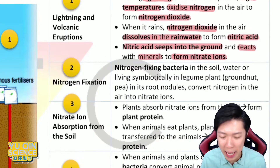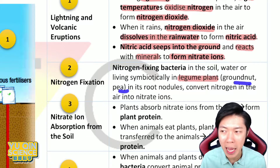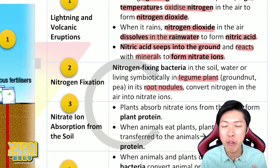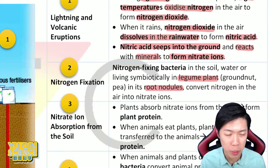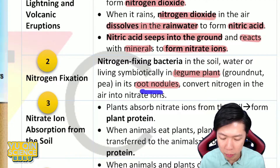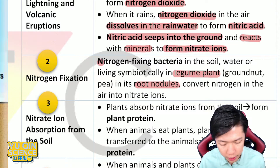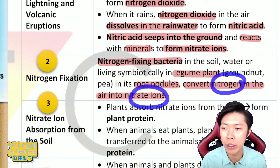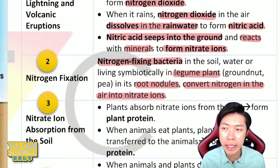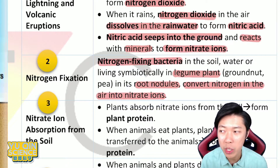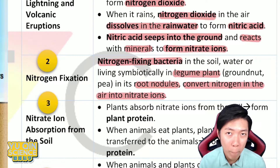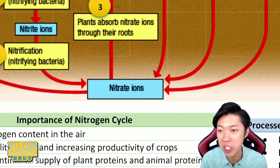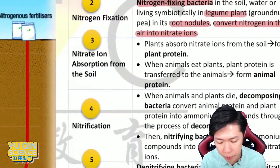The second way is by legume plants — like groundnuts, pea plants, long beans. Their roots have root nodules. This is from Form 5 Chapter 1: useful microorganisms. Nitrogen-fixing bacteria live in the roots of legume plants. Their job is to convert nitrogen in the air into nitrate ions. So finally we have nitrate ions in the soil — either by lightning or by nitrogen-fixing bacteria (NFB).